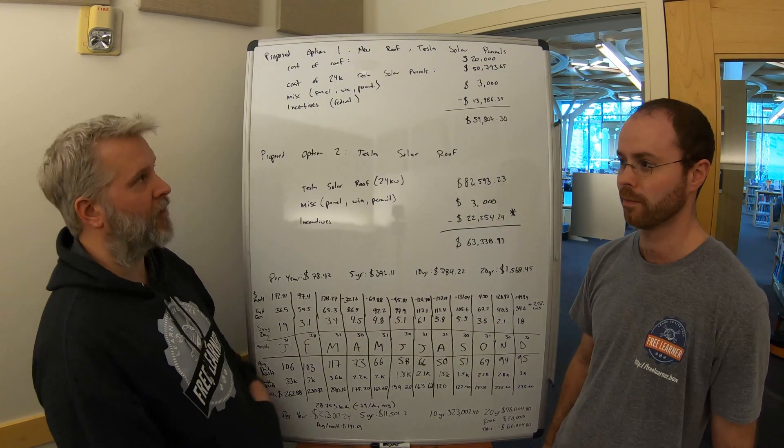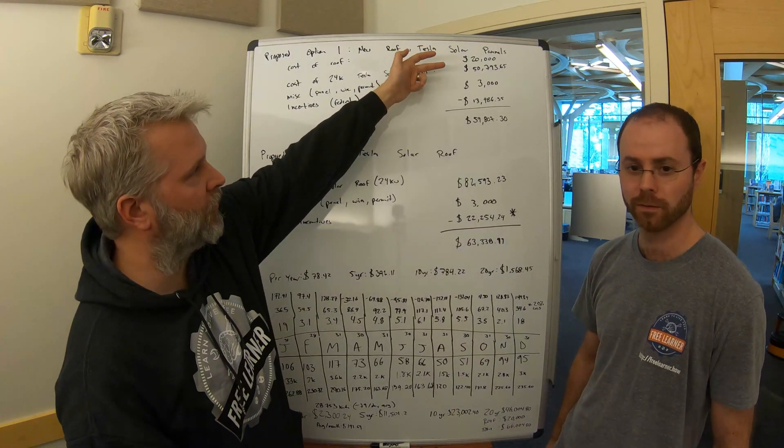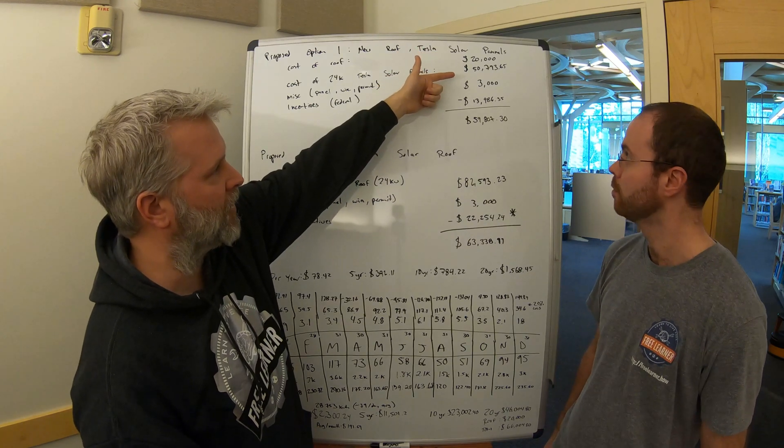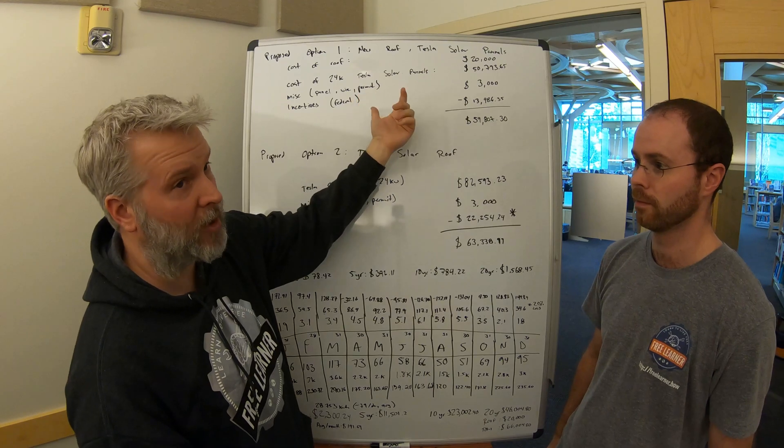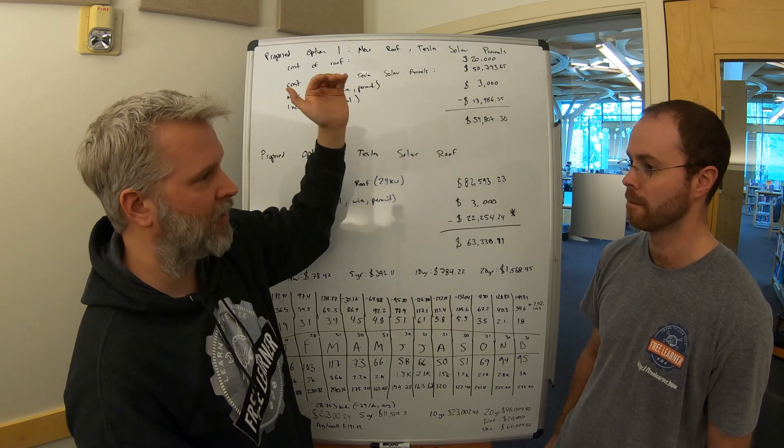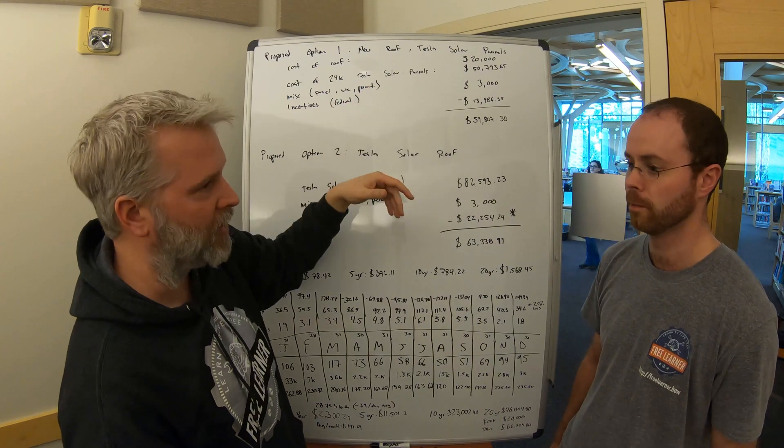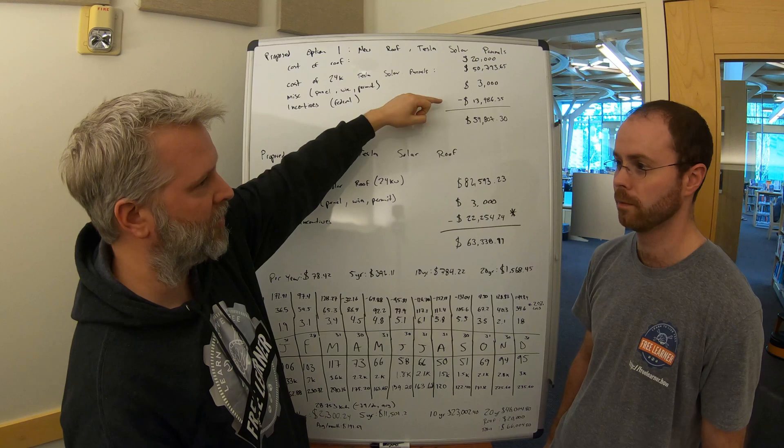Okay, so we have a couple of different systems here. This one, this $20,000 is the roof tear-off and the install. We have the panels there for $50,000. This $3,000 is because it's a 24-kilowatt system, it's a lot of power, it's almost 100 amps. So Eric needs a new service panel in both options there, plus other things that go into that.